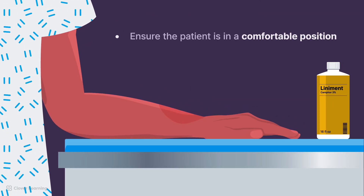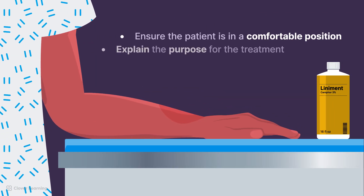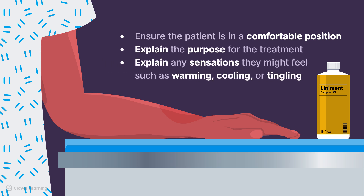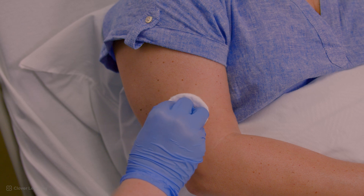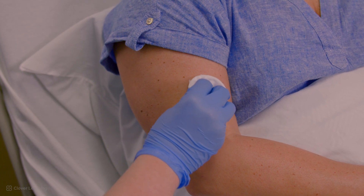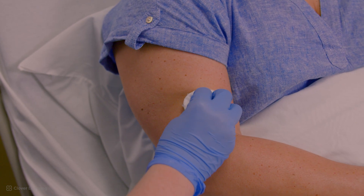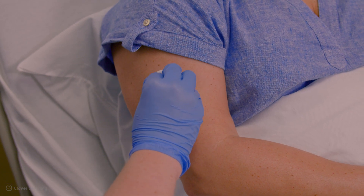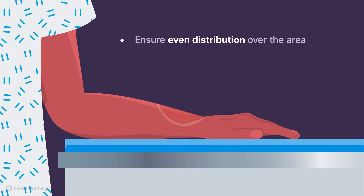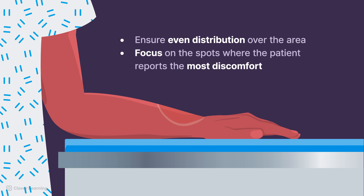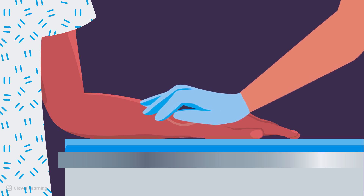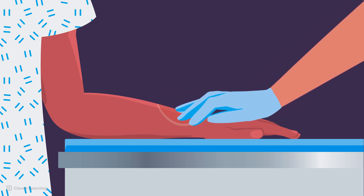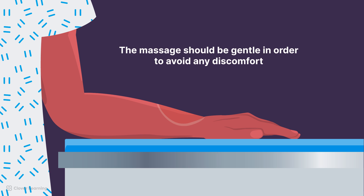For liniments, ensure the patient is in a comfortable position. Explain the purpose of the treatment and any sensations they might feel, such as warming, cooling, or tingling. Pour a small amount of liniment into your gloved hand or on a cotton ball or pad. Gently apply it to the affected area with your gloved hand using a smooth, circular rubbing motion. The goal is to cover the area thoroughly without applying too much pressure. Ensure even distribution over the area, focusing on the spots where the patient reports the most discomfort. If appropriate and comfortable for the patient, you can lightly massage the area to help absorption and increase blood flow. However, this should be done gently to avoid any discomfort.